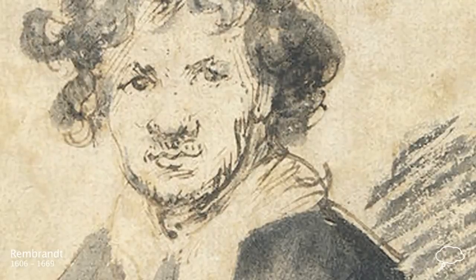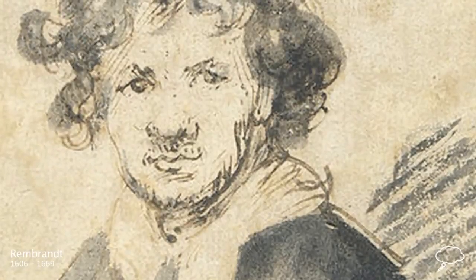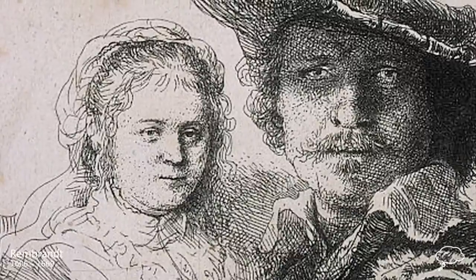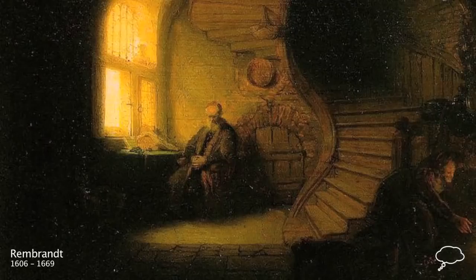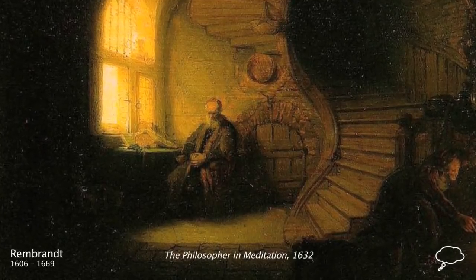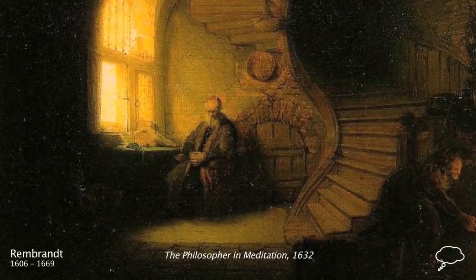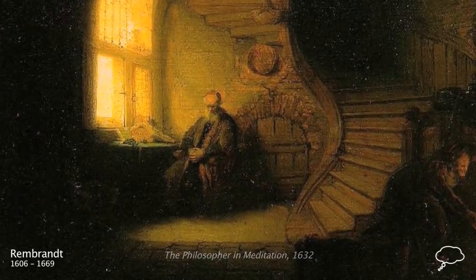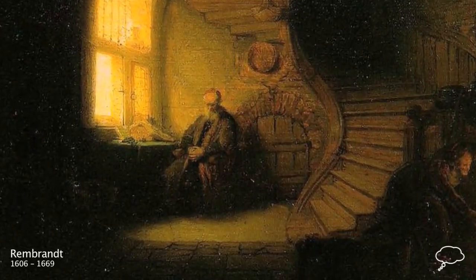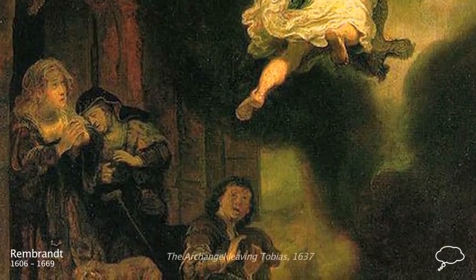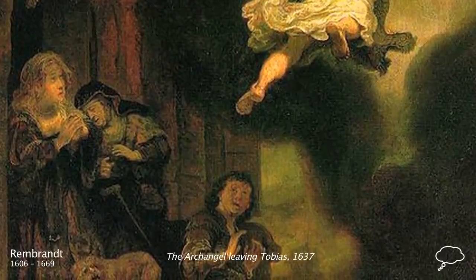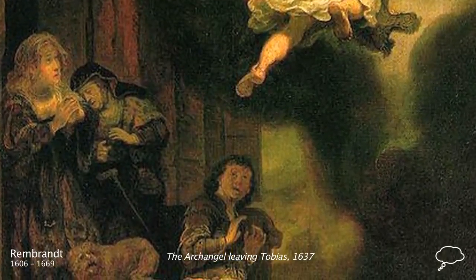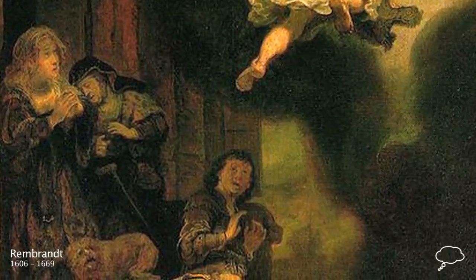Diverging from his contemporaries, Rembrandt endowed his etchings with a painterly quality, achieved through a suggestive handling of light and dark. His new style left large areas of his paintings obscured in shadow, where illumination grew rapidly weaker as it extended into the painting, creating spots of brightness and pockets of deep darkness.